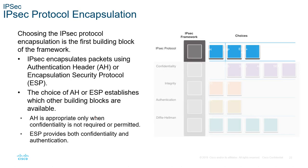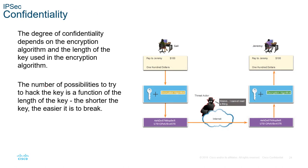AH is the Authentication Header protocol; ESP is the Encapsulation Security Protocol. We can choose what to encrypt or encapsulate — the header only, the entire packet, or both. AH is appropriate only when confidentiality is not required or permitted. If confidentiality is required, we need to use ESP, which provides both confidentiality and authentication. Once we've chosen which IPSec protocol to use, we need to decide on the level of confidentiality.